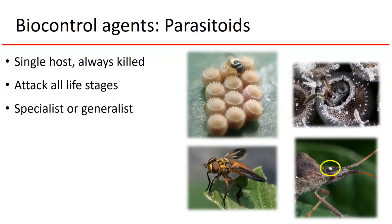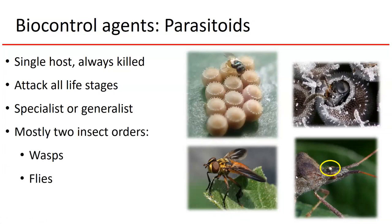Among parasitoid species, some can be specialists — attacking only a single prey species — while others are generalists that can attack a wide range of hosts across multiple species and even multiple insect orders. In general, all parasitoids belong to one of two insect orders: they're either a wasp or a type of fly. There are a few rare species of beetles and moths that are also parasitoids, but they're not really relevant in terms of biological control for cropping systems.